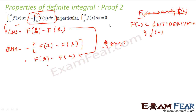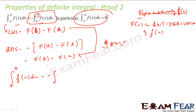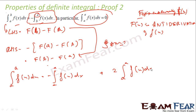Similarly, in the same equation, if I put b equal to a, the integral from a to a of f dx equals minus the integral from a to a of f dx. This gives 2 times the integral from a to a of f dx equals 0, so the integral from a to a of f dx equals 0.